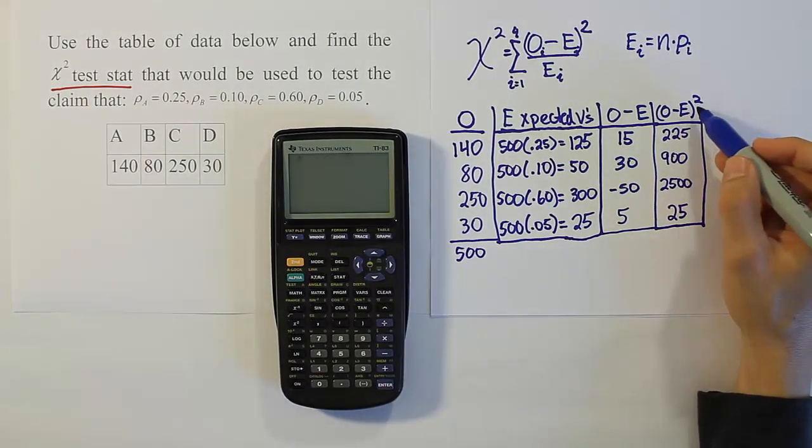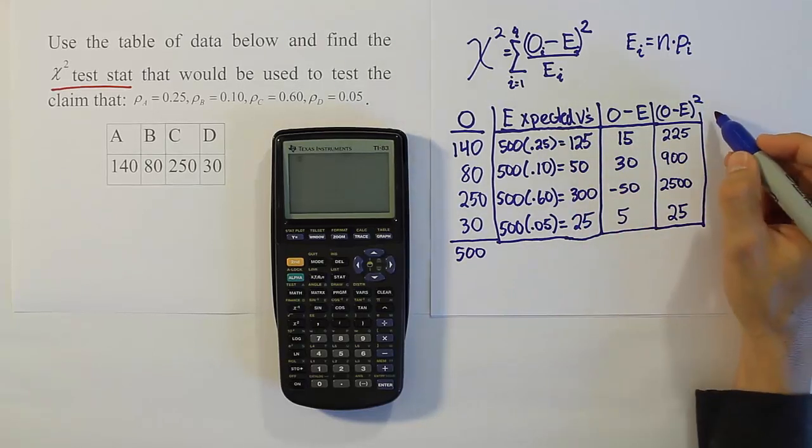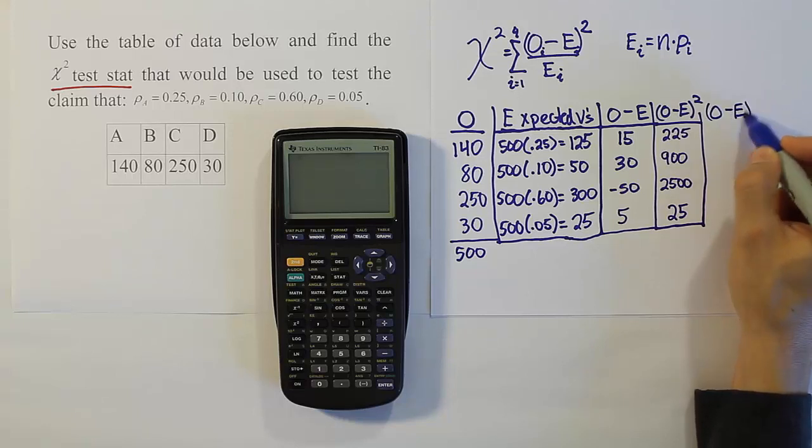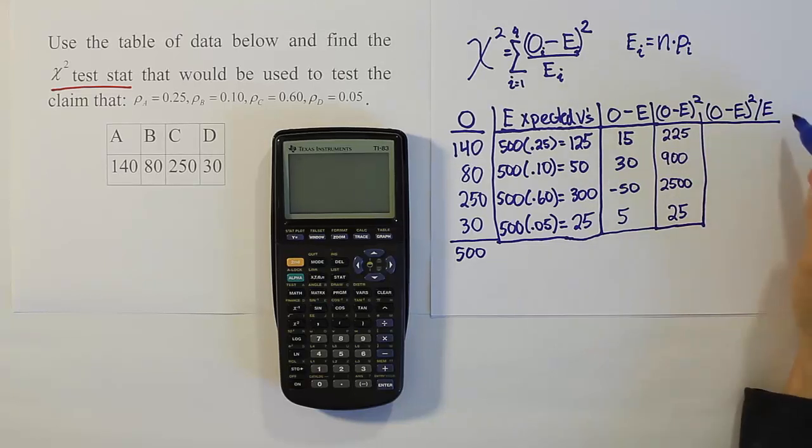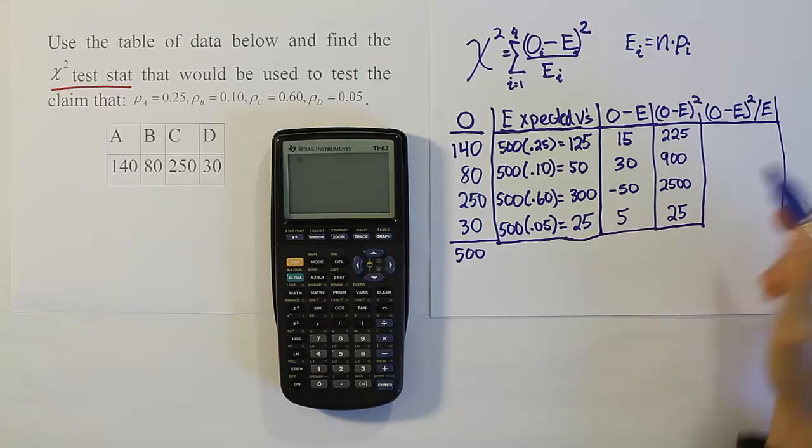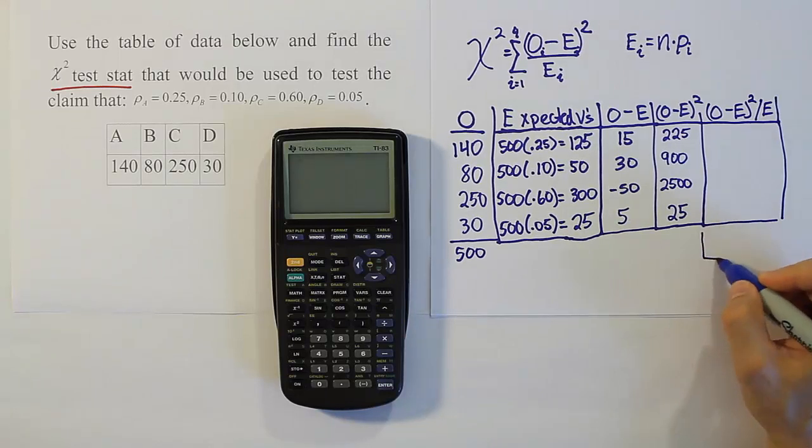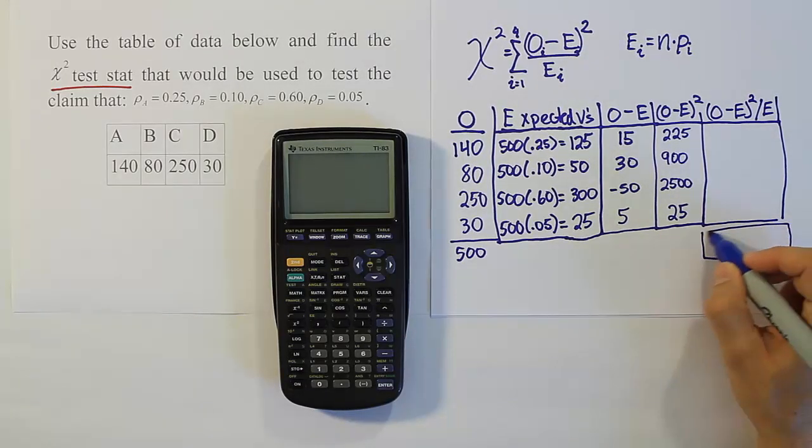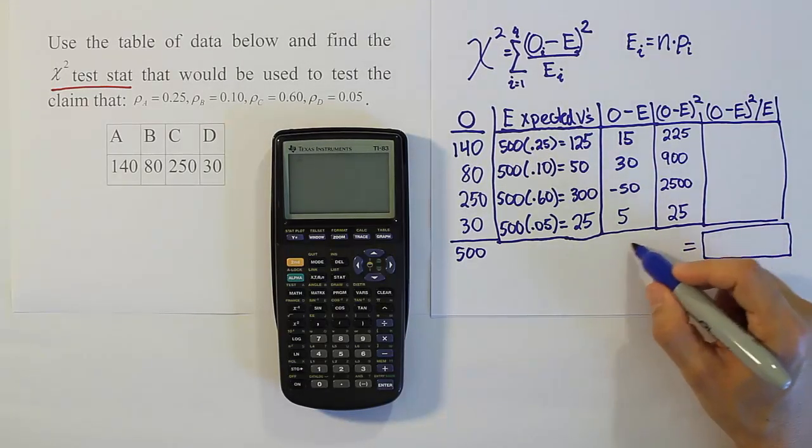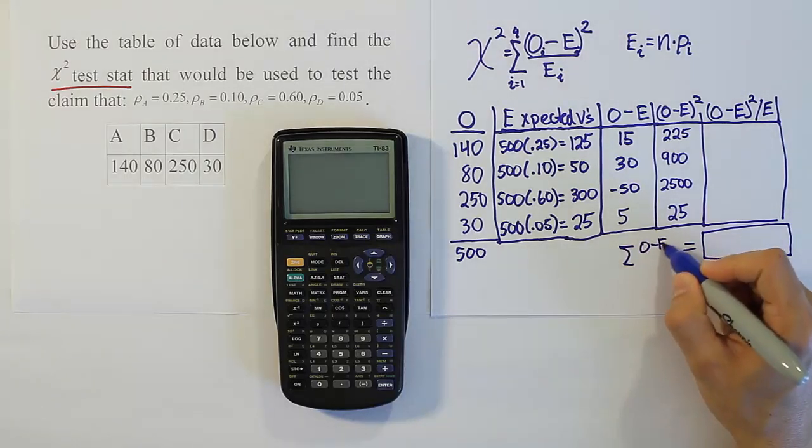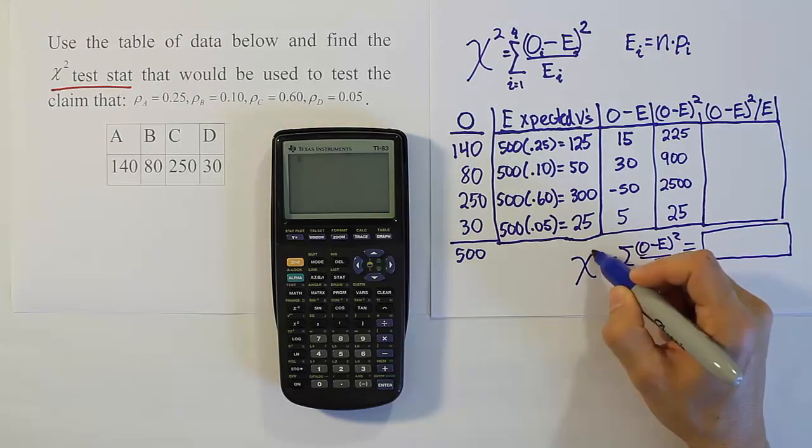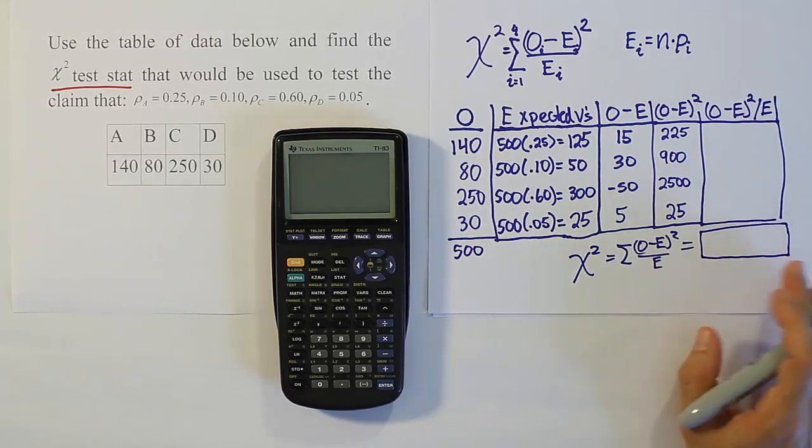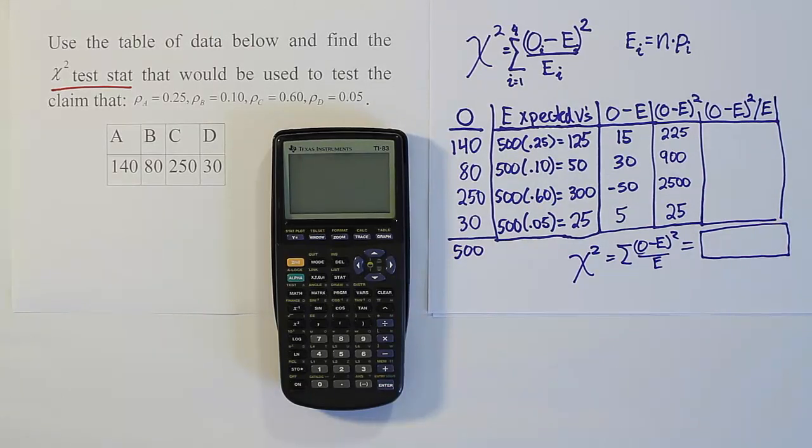Alright, so observed minus expected squared divided by the expected values now. So the final step of the process is observed minus expected quantity squared, that column that we just had, but divided by the expectations, right? And this is the important column that gives us our test stat ultimately, because we sum up this column for our solution. So down here is where we're going to get our answer from. This is going to be the summation of the observed minus expected quantity squared over the expectation, which is the same as our chi-squared test stat. Okay, so let's finish this by doing this last column, and then we'll be done.